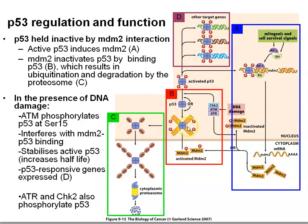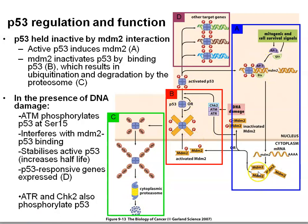MDM2 binds to p53 and then tags it with ubiquitin, which is a small protein. The poly-ubiquitinated protein is a tag which means that protein is destined for the cytoplasmic proteasome — an organelle that effectively shreds and degrades it. So p53 activates its own negative regulator, MDM2.